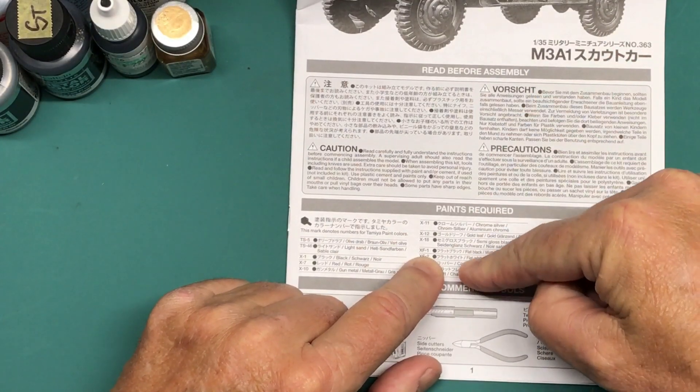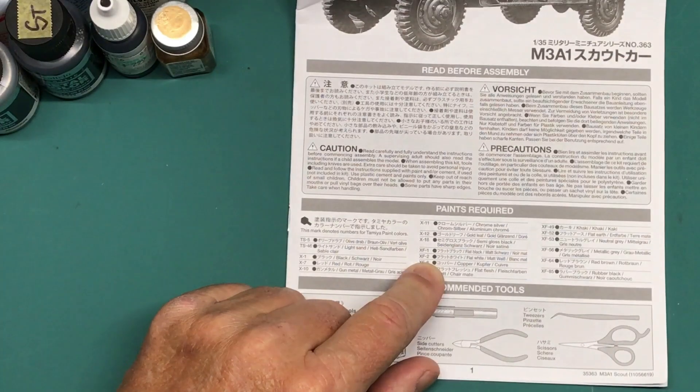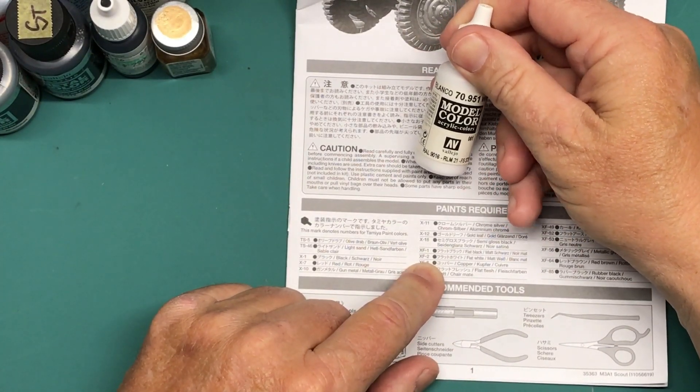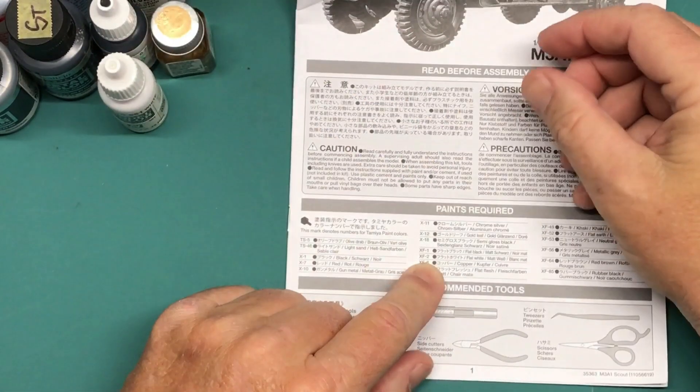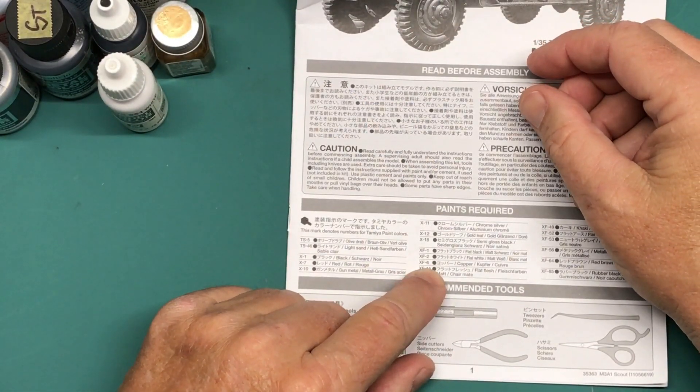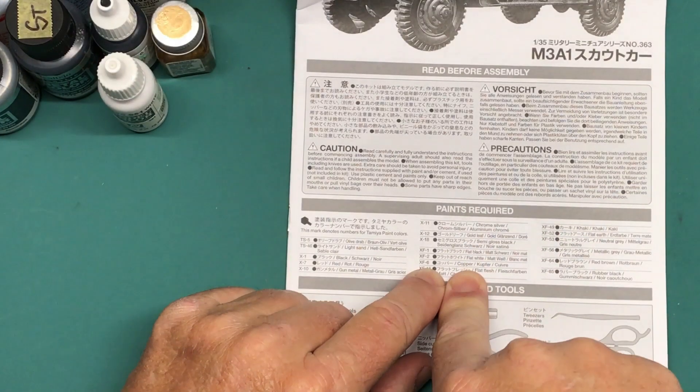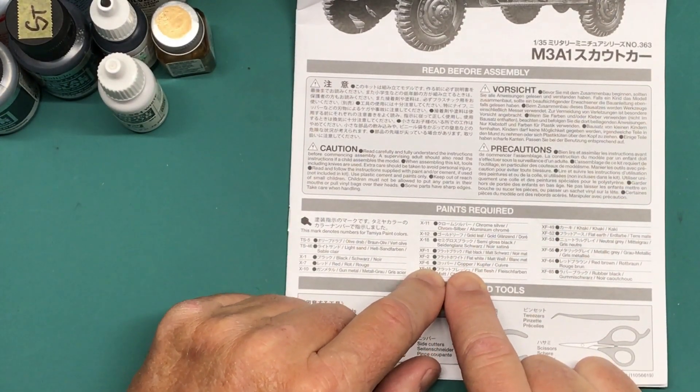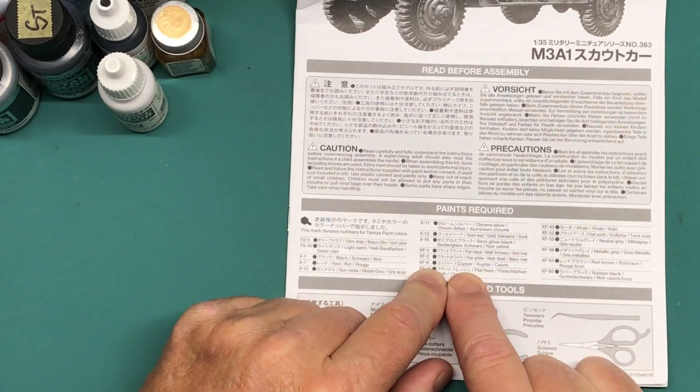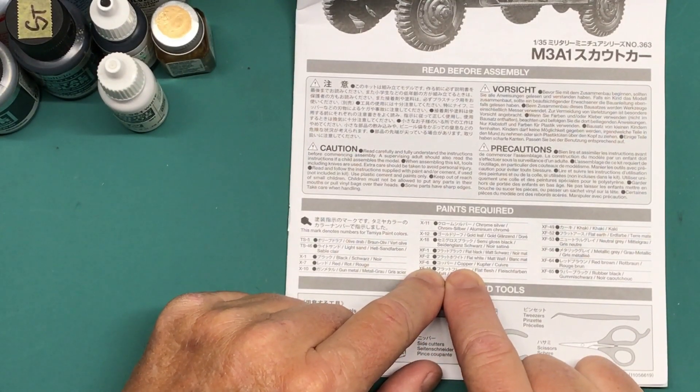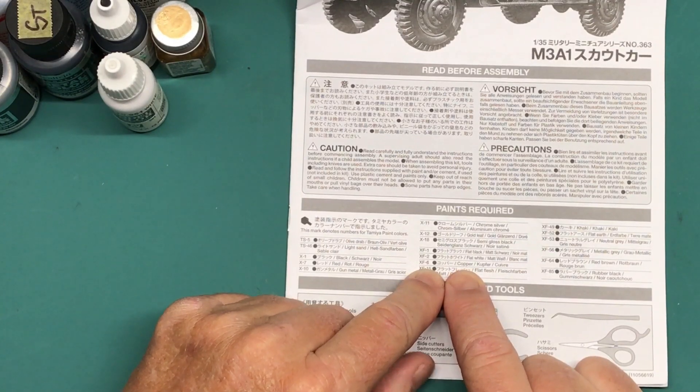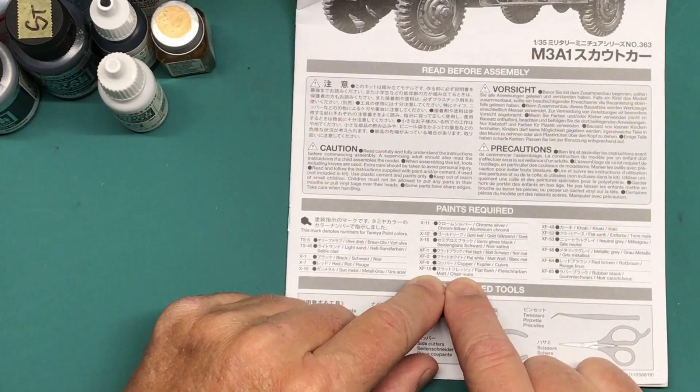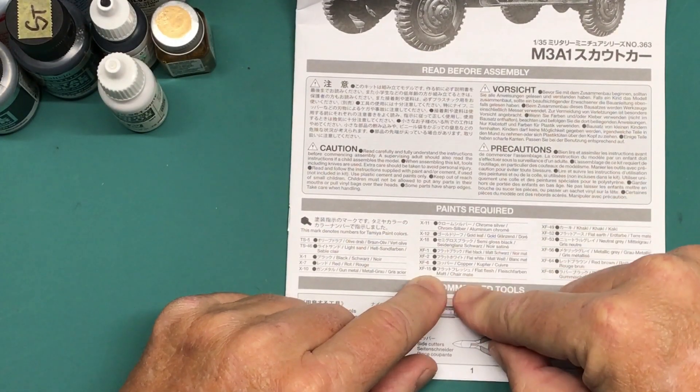XF1 Flat Black, we've already discussed that. Flat white, I'm going to be using Vallejo Model Color flat white. Then we have copper, which I have to mix something up with the gold to get copper, or I'll just have to buy some copper, but that's for the actual bullets and the ammunition belt for the machine guns, so it's very, very small. Then we have flat flesh, which that's for the figures, but we'll deal with that later.